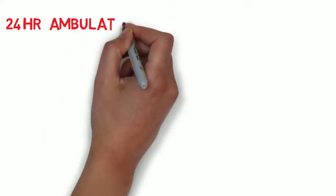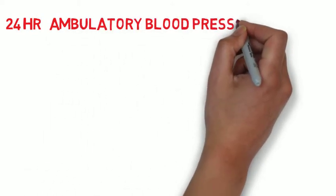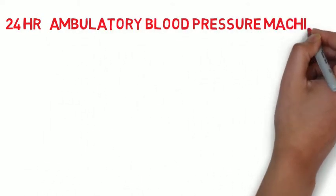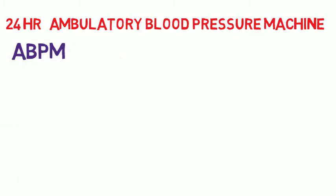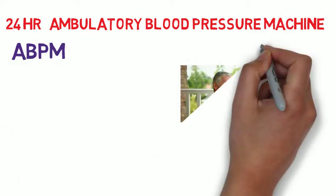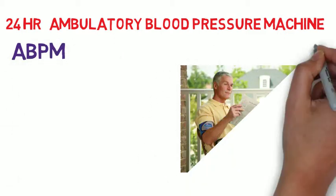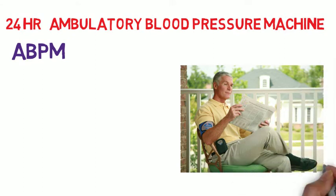In this case, the doctor may send the patient home with a 24-hour ambulatory blood pressure monitoring machine, also known as ABPM. It is a small blood pressure machine attached to a belt around the waist, connected to a cuff around the arm.